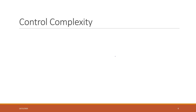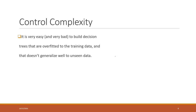Decision trees can be very powerful and also can be highly accurate on the training set. As long as you can ask an unlimited number of questions, you will finally reach the right answer. For example, if you can ask a person's name — all the person's names on earth — you can finally reach the right person's name. So decision trees can easily overfit your training data and do not generalize well to unseen data.